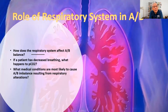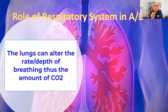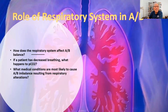Let's go into a deeper discussion on the role of the respiratory system in acid-base balance. The respiratory system affects acid-base balance because it has the ability to control the amount of carbon dioxide a patient has. If a patient has decreased breathing, what happens to carbon dioxide in the arterial blood? It's going to increase. The amount of CO2 is related to how much and how well the patient is breathing.